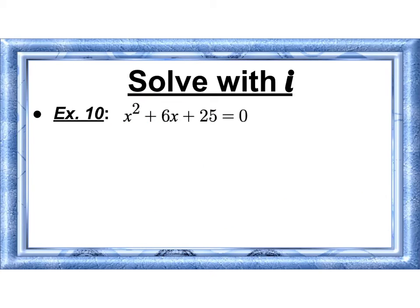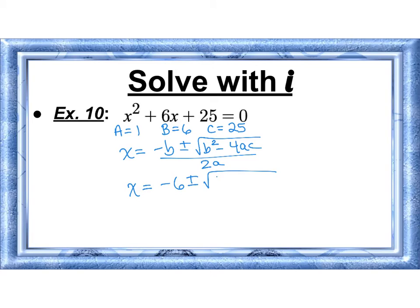Let's try to solve this. It's not factorable, so I'm going to do the quadratic formula. It's in standard form set to 0. a equals 1, b equals 6, and c equals 25. I'm going to write out my quadratic formula x equals negative b plus or minus b squared minus 4ac all over 2a. x equals negative 6 plus or minus 6 squared minus 4 times 1 times 25 all over 2 times 1.